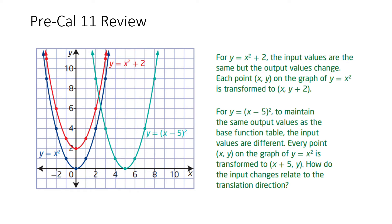Welcome! In today's video I will talk about function transformations. Let's first take a quick review of pre-calculus 11. In pre-calculus 11 we have already learned some basic function transformations. For example, if the original function is y = x², then plus 2 means 2 units up, and y = (x - 5)² means 5 units to the right. So if this point is (0, 0), the vertex after +2 will move to (0, 2), and if moving 5 units to the right it will become (5, 0).